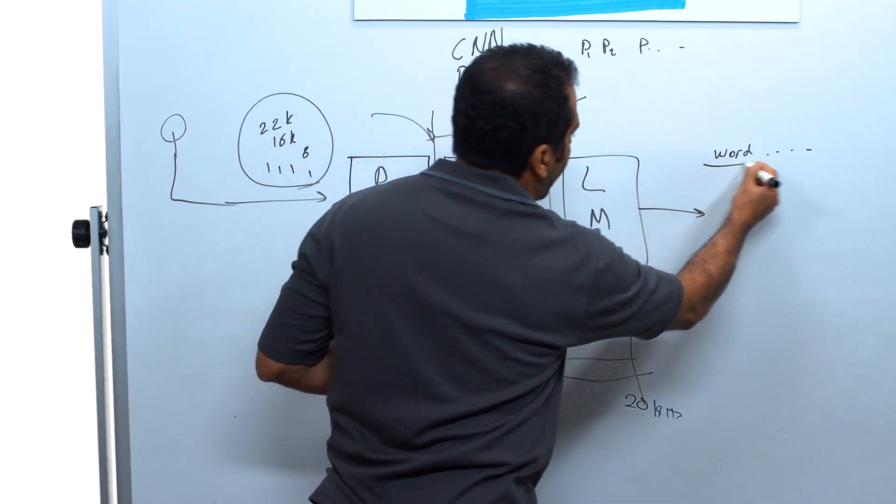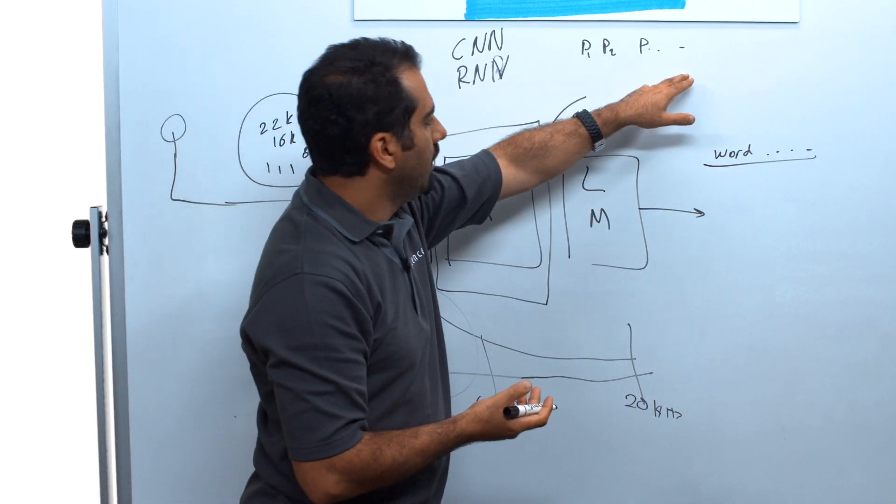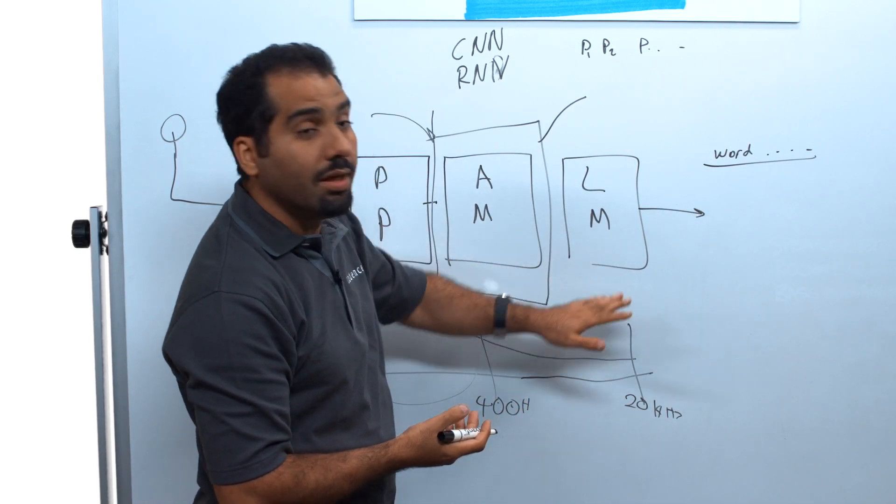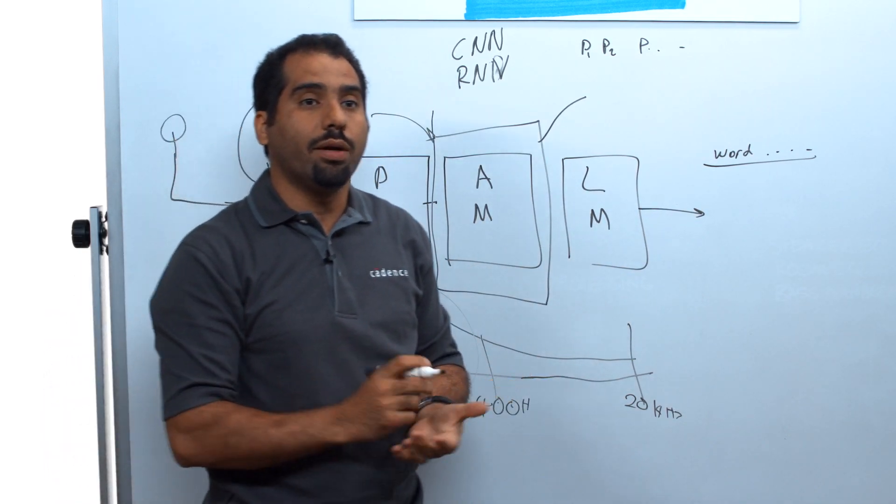That's good, but still we don't have words. So who's going to take these probabilities and provide me words? Well, as expected, it would be the language model. So what is the language model?